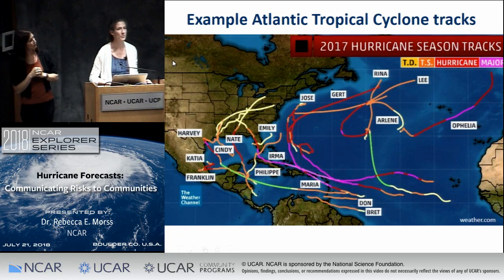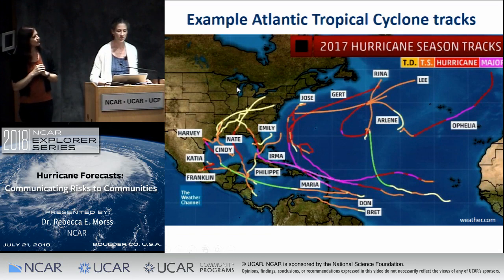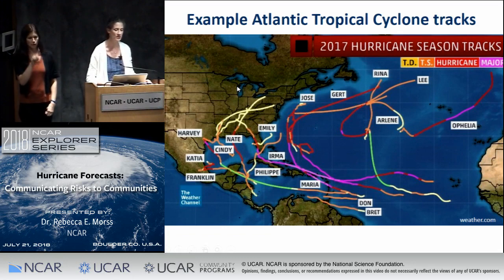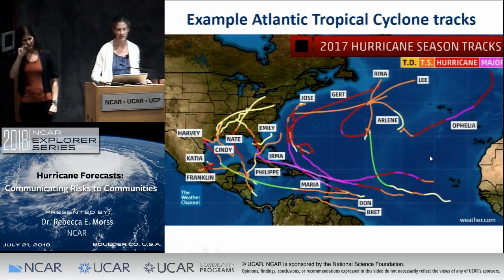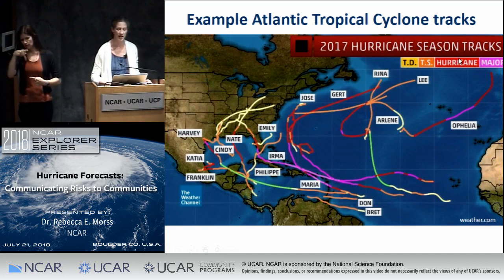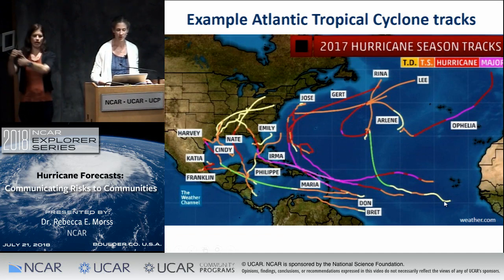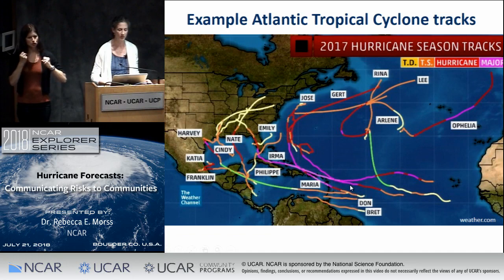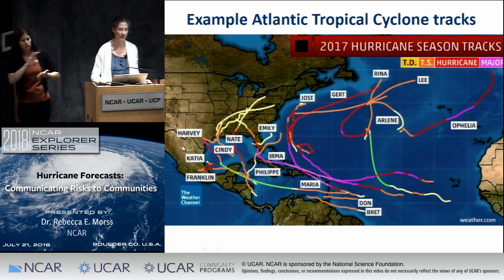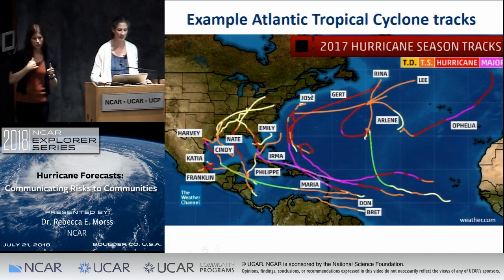I wanted to talk about how tropical cyclones tend to move across the ocean. This shows the tracks of the 2017 storms in the North Atlantic. TD stands for tropical depression, TS for tropical storm, and then hurricanes and major hurricanes on the Saffir-Simpson scale. Tropical storms and hurricanes tend to form along the coast of Africa, then strengthen and move westward across the tropical Atlantic, then often recurve northward, with some traveling into or strengthening in the Gulf of Mexico.